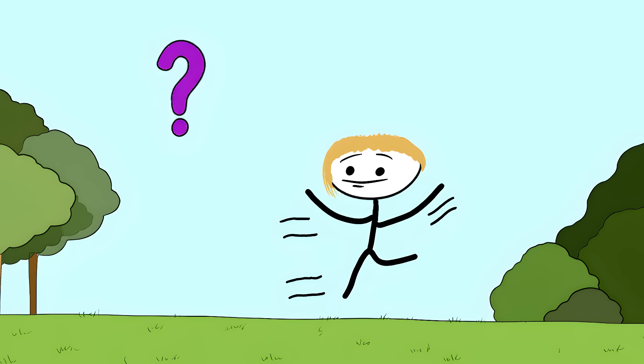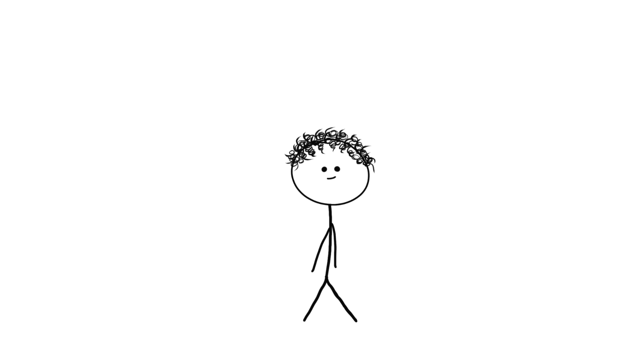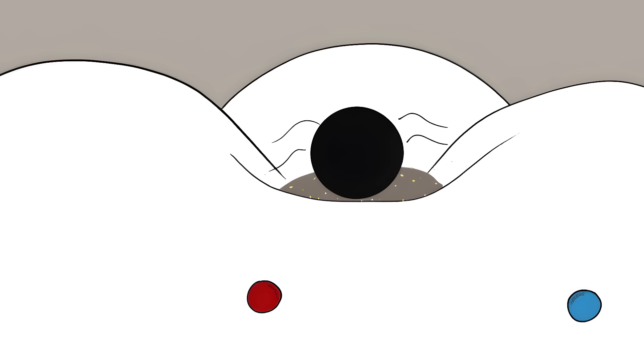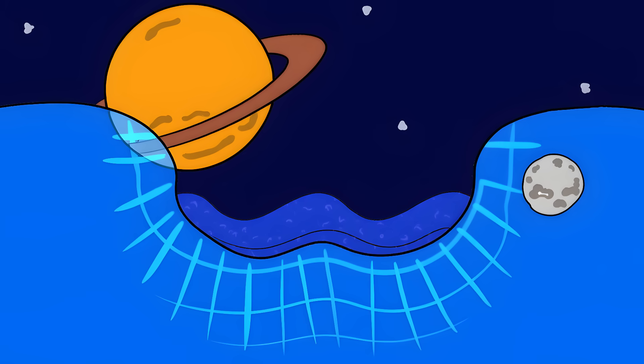Gravity. We all learned about gravity in school. It's what makes stuff fall down, right? Well, turns out it's way weirder than that. Imagine putting a bowling ball on your bed. The mattress curves around it, and marbles would roll toward the dip. That's basically what planets and stars do to space itself.